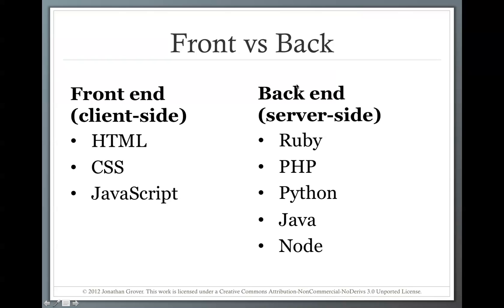That's in contrast to back-end web development, where programming languages on the back end are interpreted by the server on the server side. For example, Ruby, PHP, Python, Java, and Node — which is a version of JavaScript on the server — all of these programming languages work to update objects, interact with a database, and eventually render the HTML and CSS files that are then passed to the front end, passed to your browser. That's the main difference between front-end and back-end development.